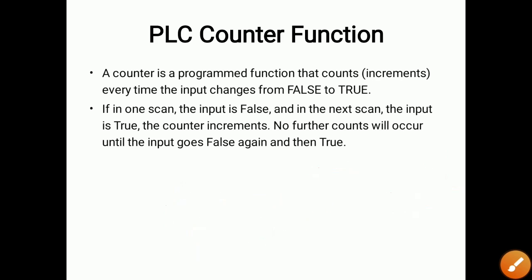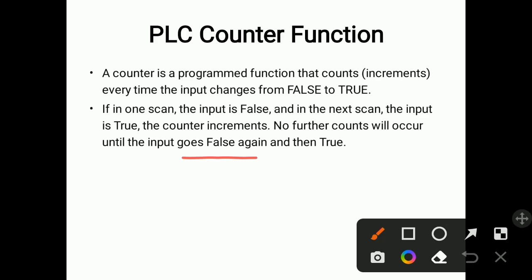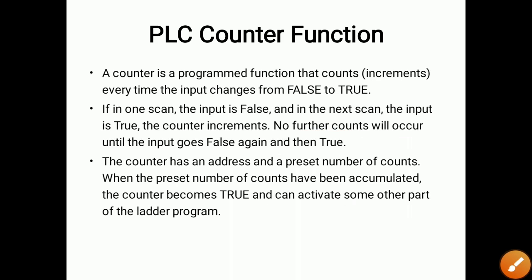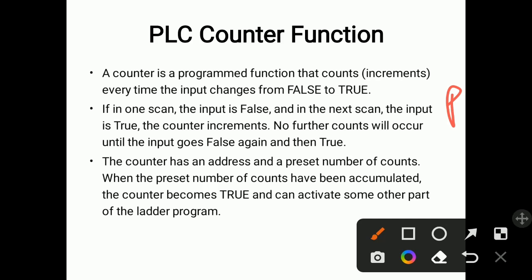Until the input goes false again and then true again, no further count will occur — the key condition is that false must be converted to true. The counter has an address and a preset number of counts. When the preset number of counts have been accumulated, the counter becomes true and can activate some other part of the ladder diagram.